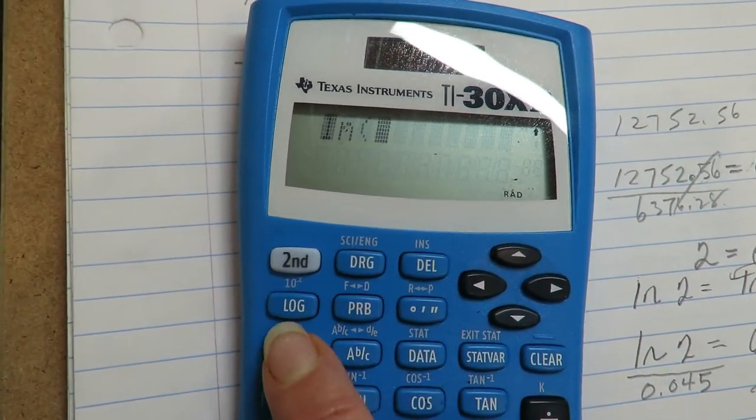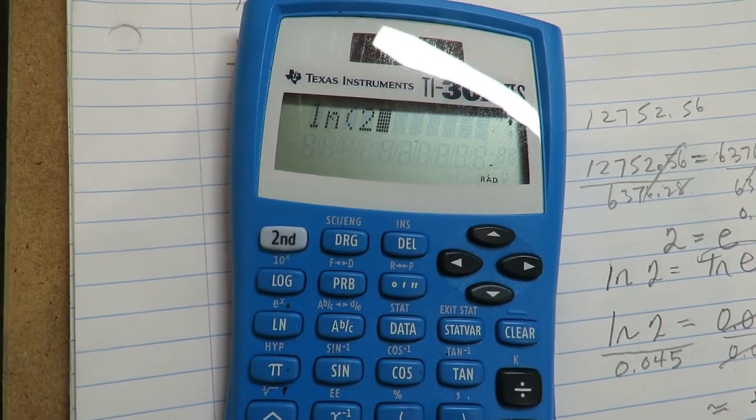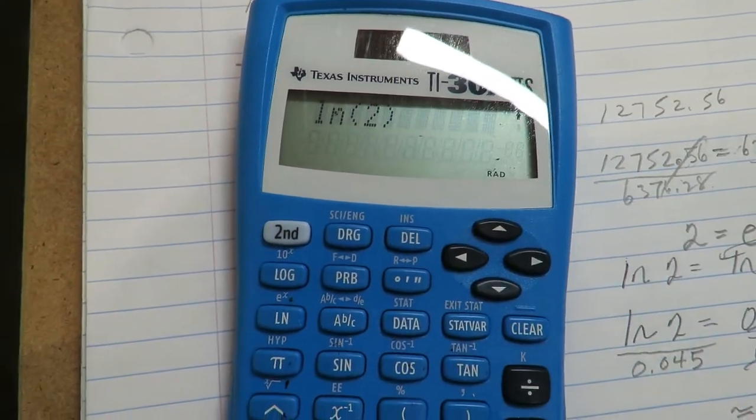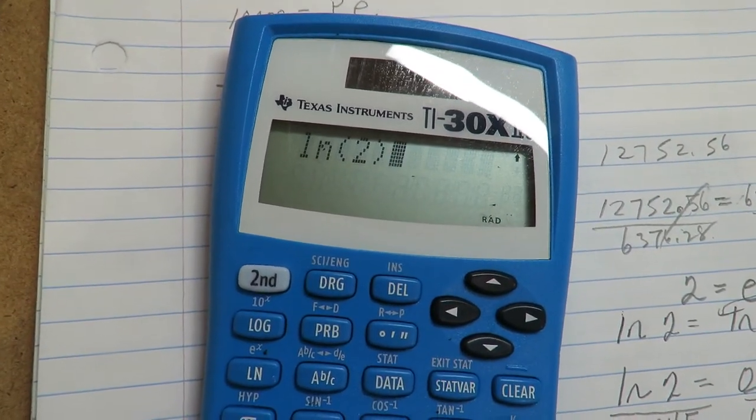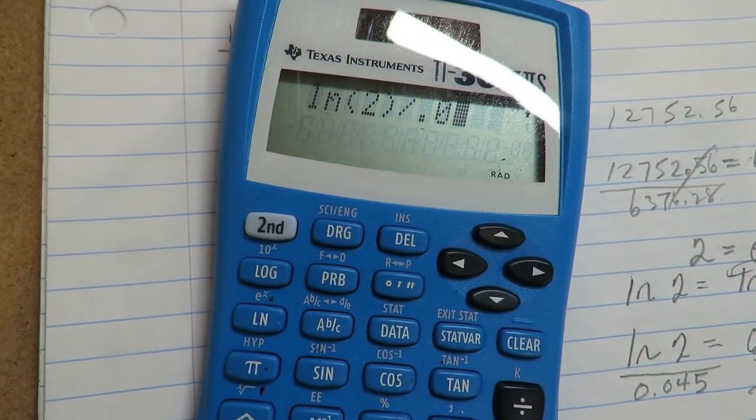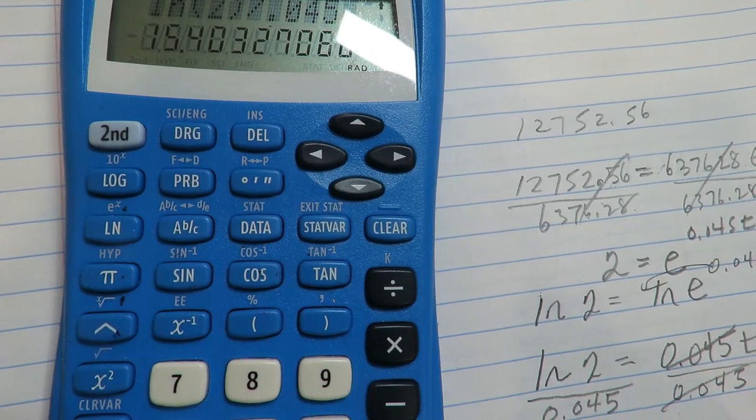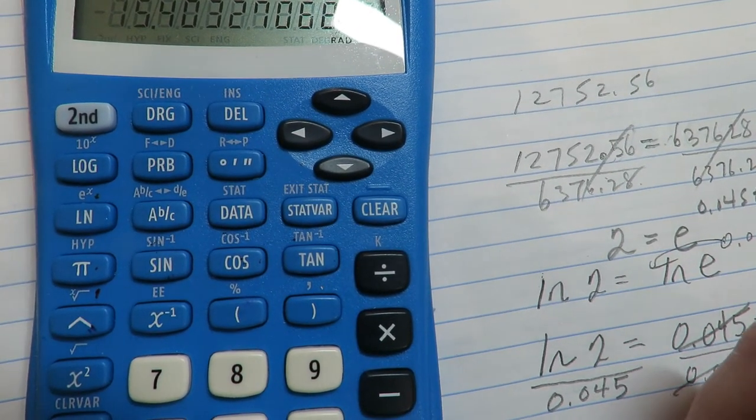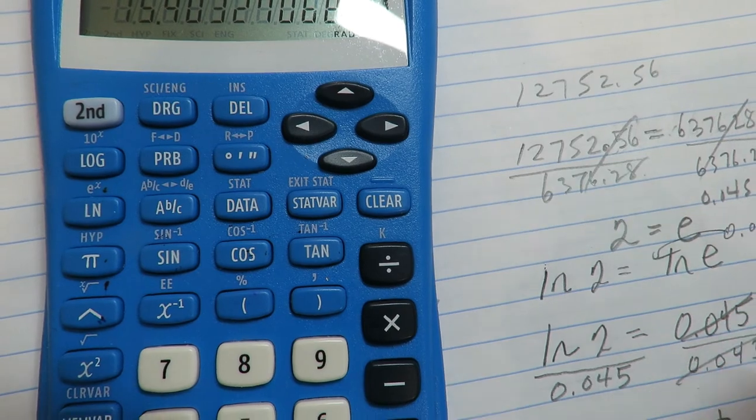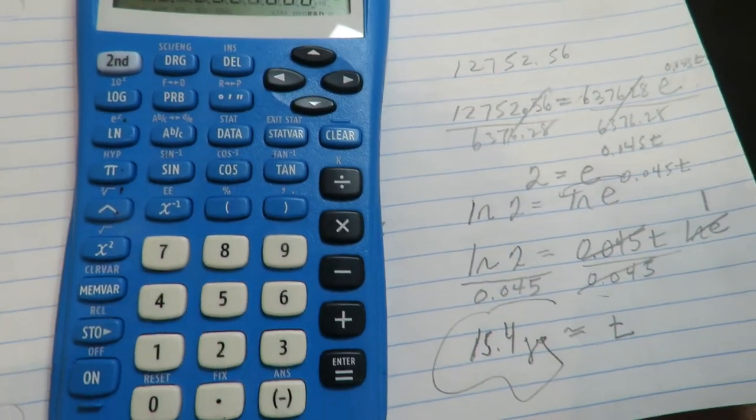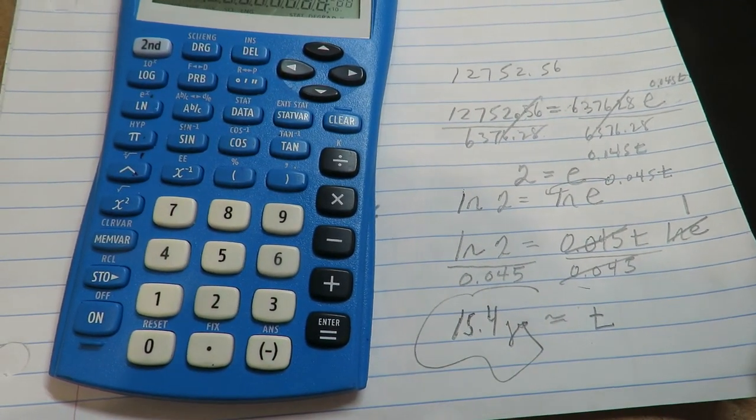Like if I do this, which is wrong, this is wrong what I'm doing here. It's shoving all of this into the ln, which is wrong. You don't want to do that. You just want the 2 in the ln and you close the ln here. Now the ln's finished and then I say divide it by 0.045. Okay, so it's about 15.4 years for it to double. All right, I hope that helped. Catch you.